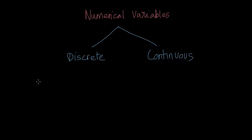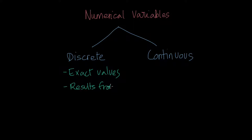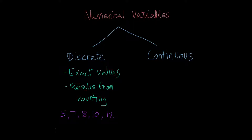The discrete variable is when we have exact values, and it results from counting. For example, you have a bag of candies and you want to count how many candies there are. You have different bags and you get values like five, seven, eight, ten, twelve. These would be discrete because they are exact values and result from counting.